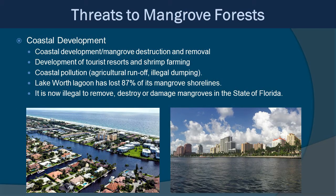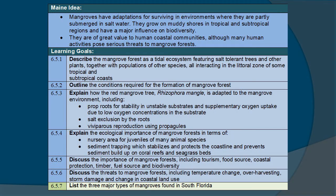Coastal development leads to mangrove destruction and removal — a big issue here in Florida as well as many other tropical regions. This is driven by development of tourist resorts, shrimp farming, coastal pollution, agricultural runoff, and illegal dumping. The Lake Worth Lagoon has lost about 87% of its mangrove shoreline, though there are programs looking at restoring those areas. It is now illegal to remove, destroy, or damage mangroves in the state of Florida. Those are your learning goals and main ideas one more time — I hope you learned something about mangroves along the way. It's a really important habitat, and until next time, keep exploring and keep learning.